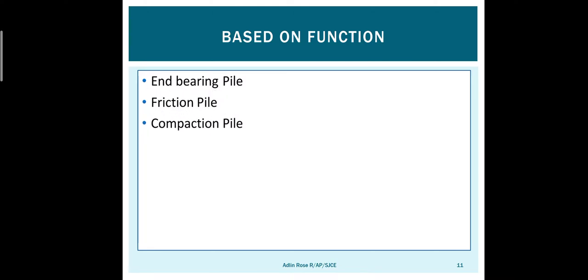The second type is friction pile. Sometimes the rock may be very deep and we cannot dig that far. If the soil is sandy soil, instead of inserting the pile foundation into the rock, we leave it at some length. Sandy soils have frictional properties, so because of the friction between the pile and the soil, the load is transferred through frictional resistance from the soil. This is called frictional pile — especially for sandy soils.